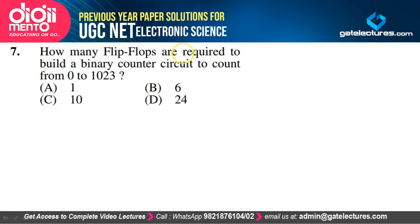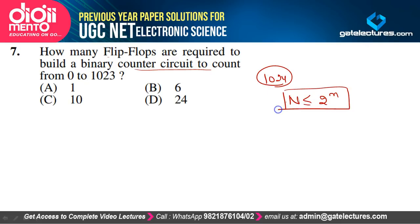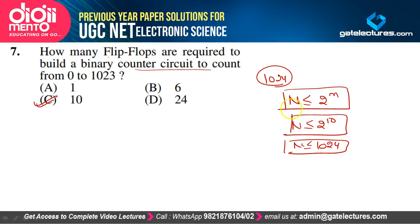How many flip-flops are required to build a binary counter to count from 0 to 1023? There are 1024 total counts (0 to 1023). The number of states equals 2^n, so 2^10 = 1024. Therefore 10 flip-flops are required. Option C is the answer.